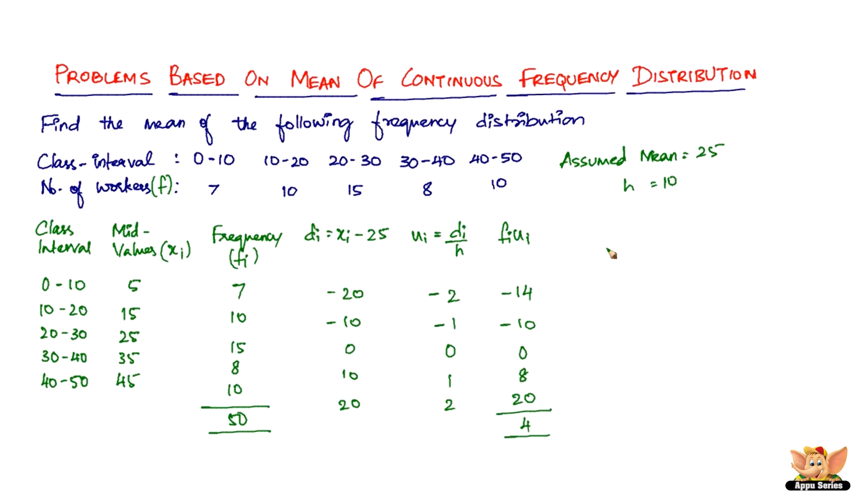So the formula is not very different from the previous thing, that is step deviation. So we have here mean, that is X bar equals A plus H times 1 by N into summation of Fi Ui. So here A is 25 plus H is 10 times 1 by 50 and then times 4. 10 goes 5 times in 50, and then you've got 25 plus 4 by 5, which is 25 plus 0.8.